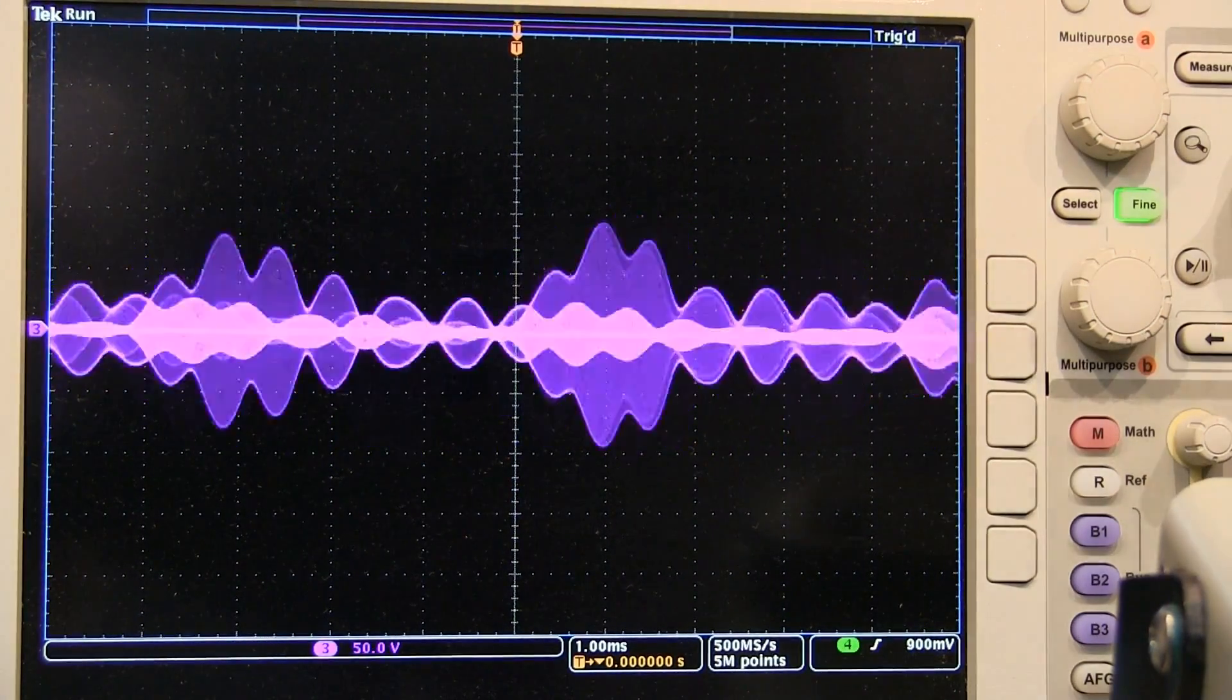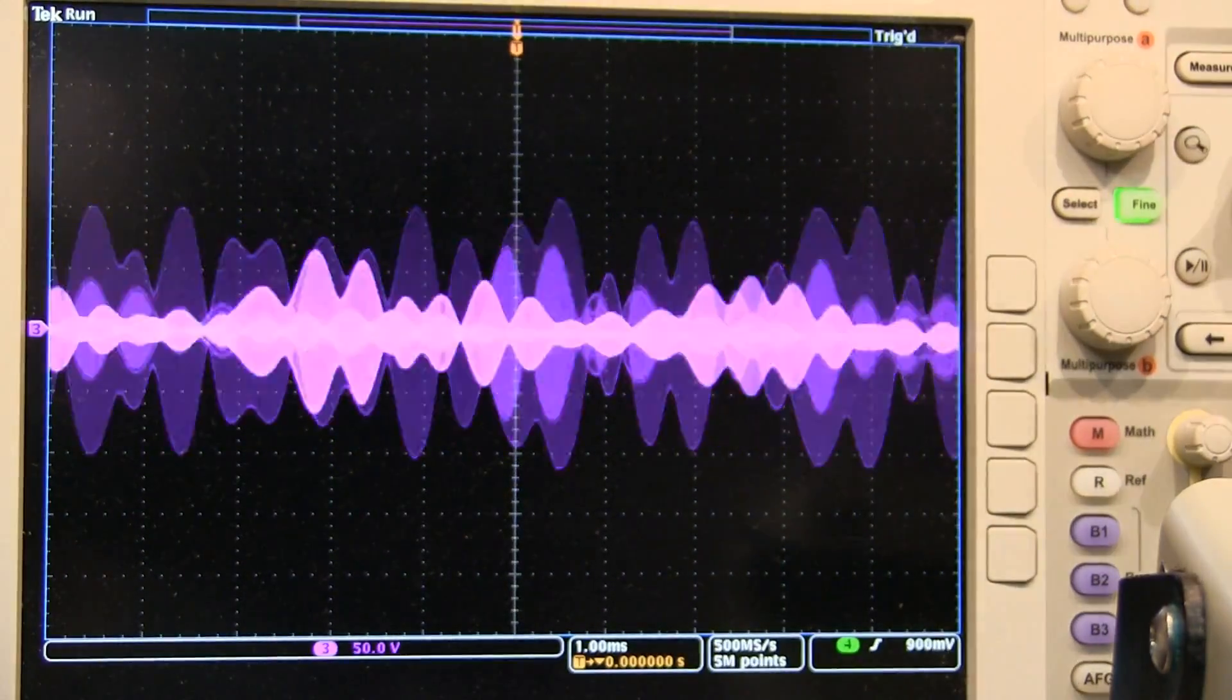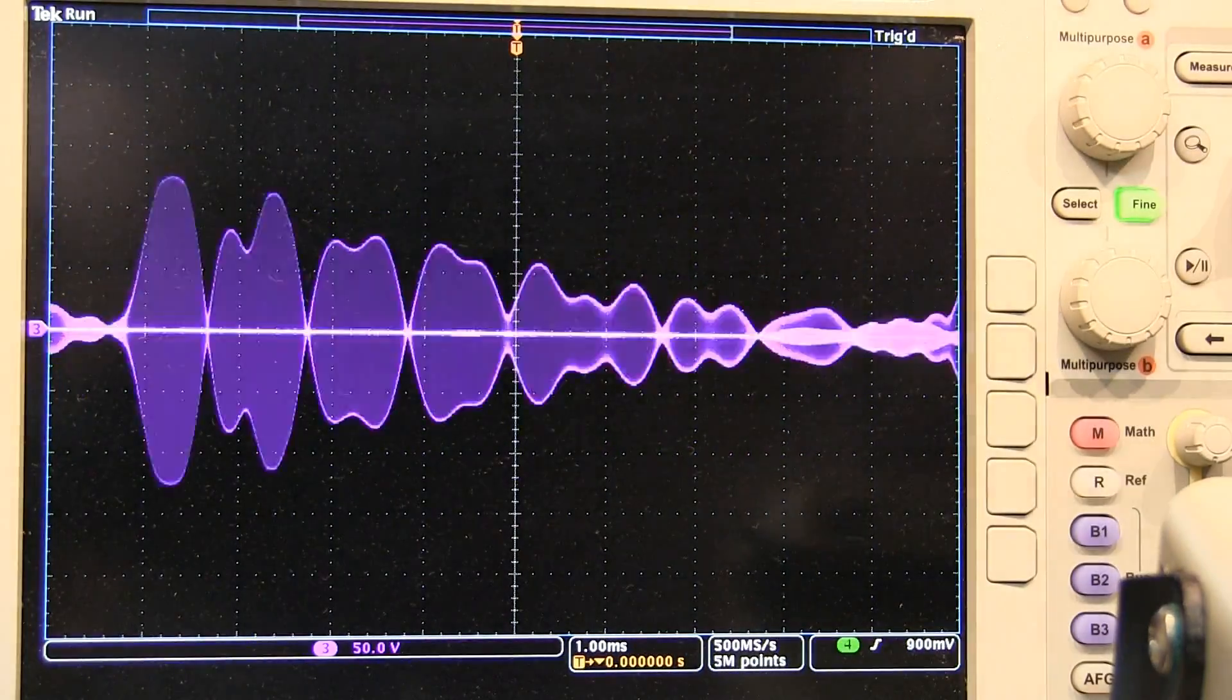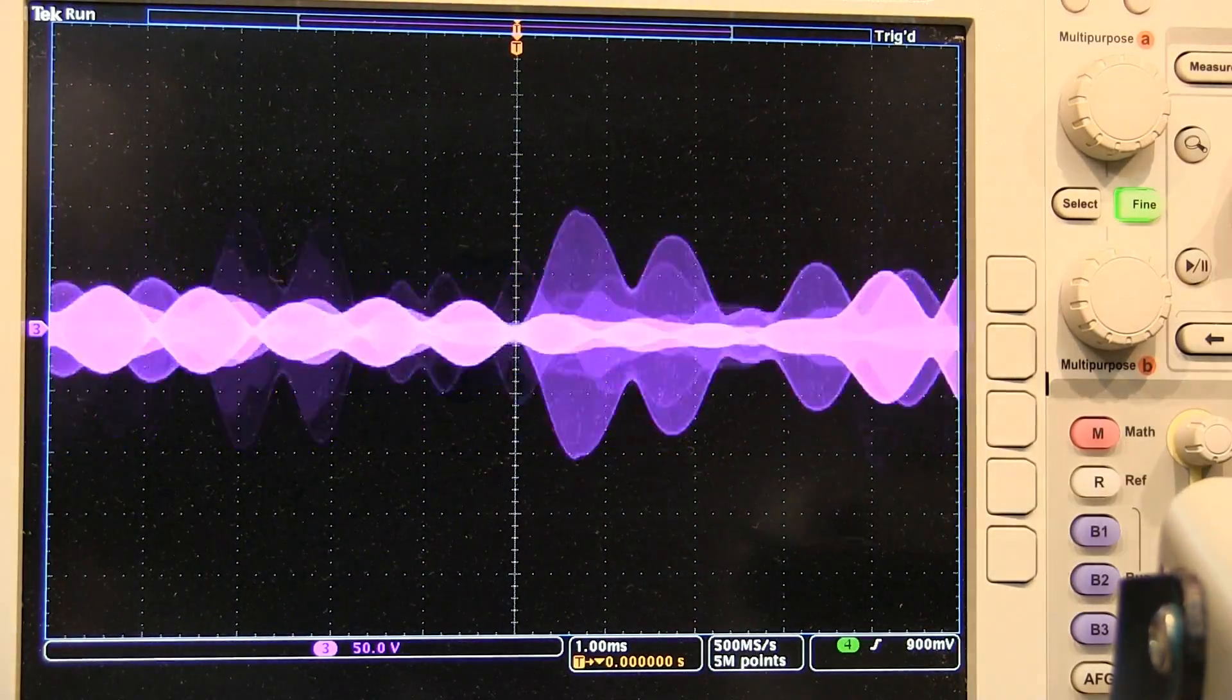In today's video, we're going to be talking about single sideband and AM RF envelopes and the power measurements and considerations for these various signals.